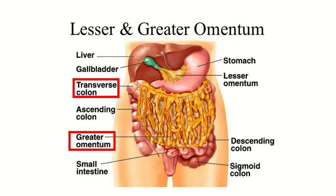Here we can see the greater omentum — this yellowish structure attached at the greater curvature of the stomach. It descends down and also attaches to the transverse colon. The greater omentum lies anterior to the transverse colon. We can also see the lesser omentum, stomach, liver, gallbladder, and parts of the large intestine including cecum, appendix, ascending colon, transverse colon, descending colon, sigmoid colon, rectum, and anus.